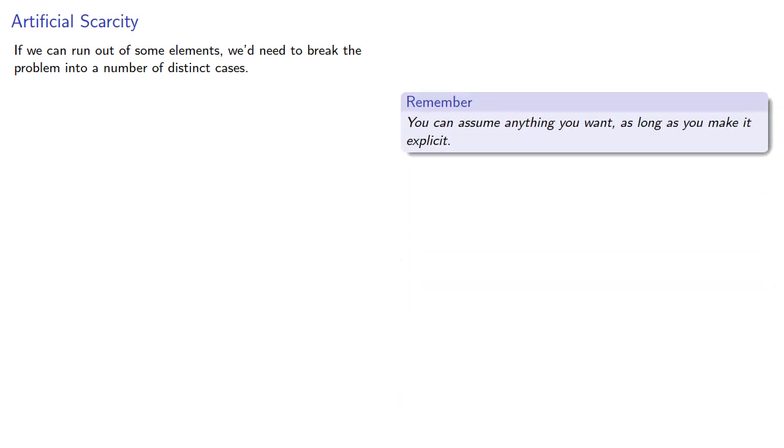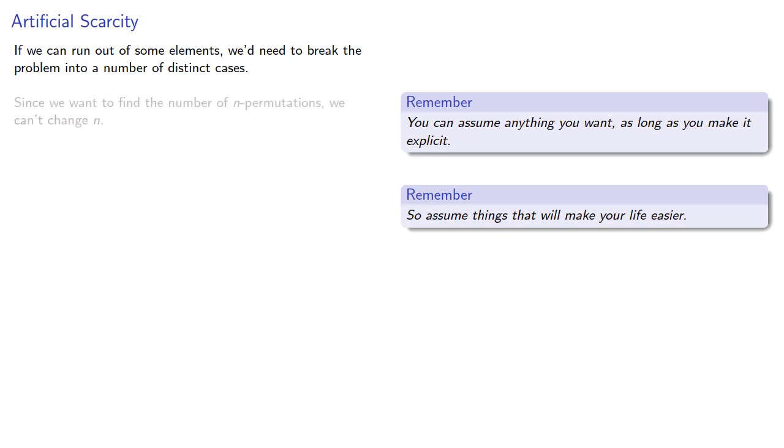Now remember, you can assume anything you want, as long as you make it explicit. And so we'll assume things that will make our life easier. Since we want to find the number of n permutations, we can't actually change n, but we can change our multiset so that n is the sum of the repetition numbers.